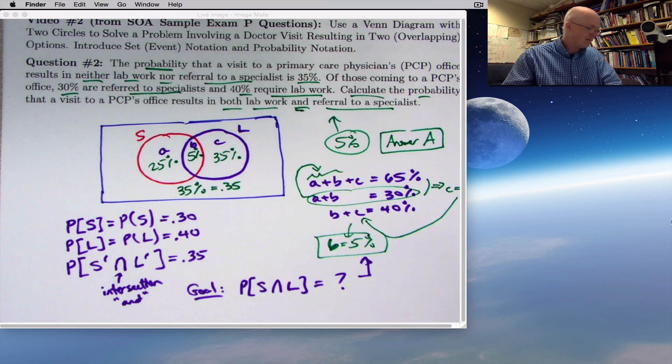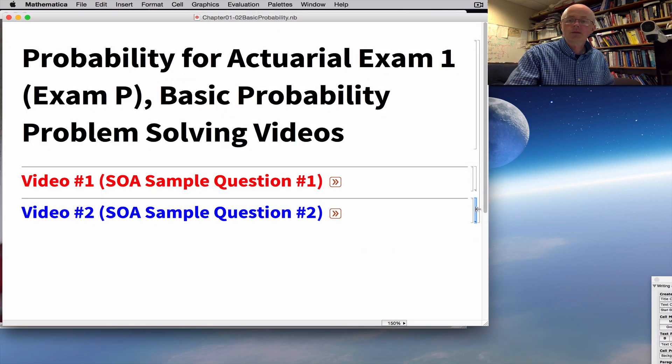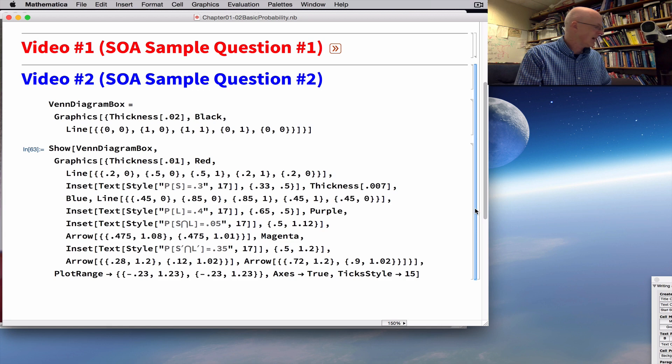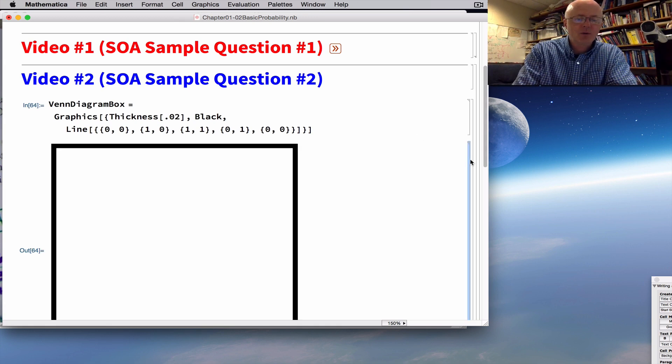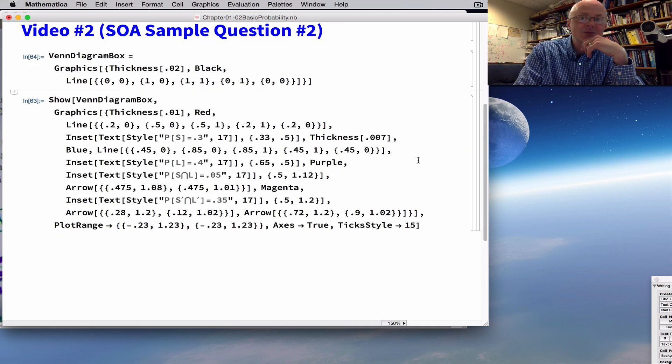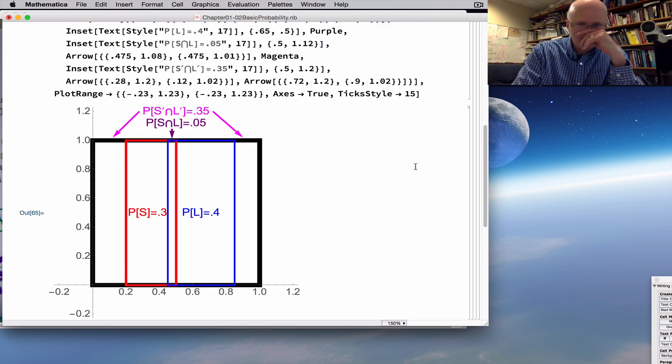Let's end the video by going to a Mathematica document, not just to see Mathematica, but to see a way to think about these Venn diagrams that is sometimes helpful, especially when we get into conditional probability. This is a Mathematica notebook. It can do various things, a lot of cool math. I'm doing very basic things here, just making diagrams that obviously can be made more simply in other ways, but this code does make the diagram.